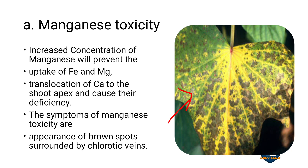The graph shows symptoms surrounded by chlorotic veins. This refers to chlorosis — a yellowish-green discoloration — along with brown spots. This describes manganese toxicity, where manganese mineral exceeds the critical concentration.